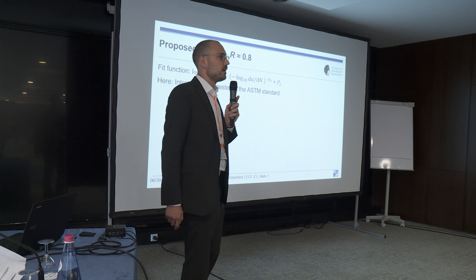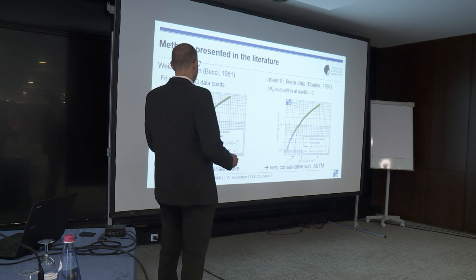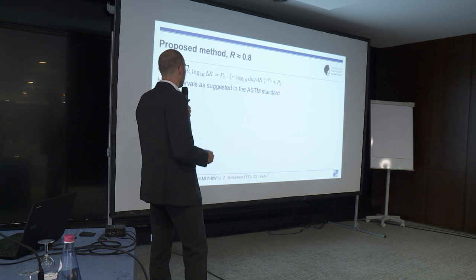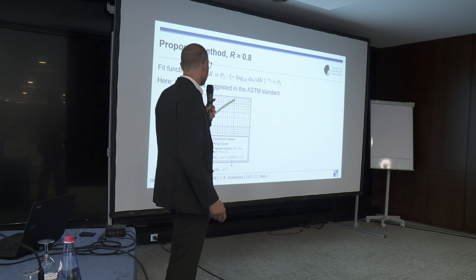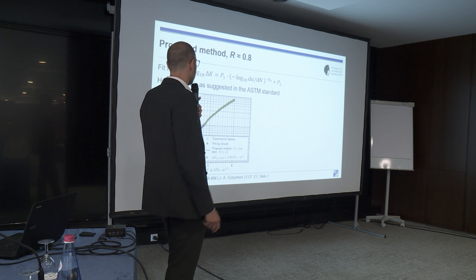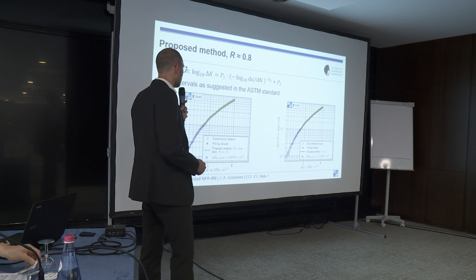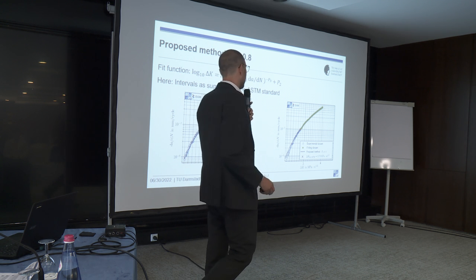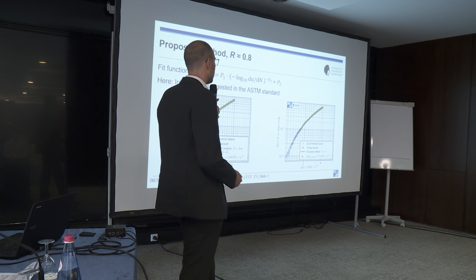We looked for other fitting functions that better represent the data. Motivated by the almost hyperbolic shape when the ΔK axis is transformed, we found a three-parameter polynomial with a negative exponent that fits the crack growth data satisfactorily. As you can see on the left-hand side, using our three-parameter polynomial on this data yields an exponent of −4.6 and a good approximation. To reduce fitting complexity, we fixed the exponent to −4, which introduces only minimal artificial conservatism while providing a good two-parameter fit.